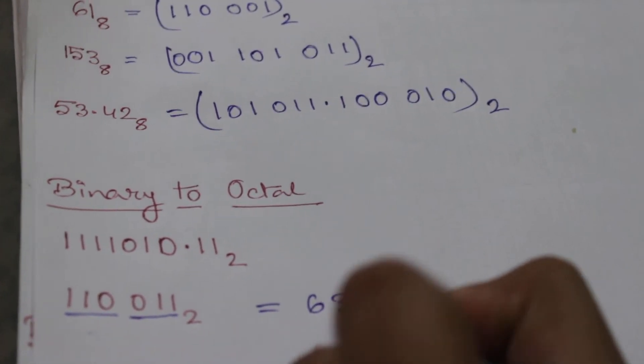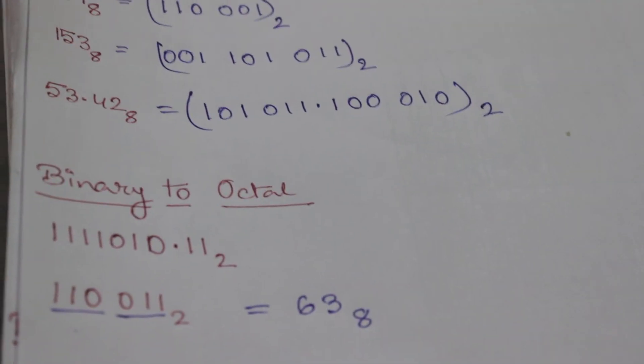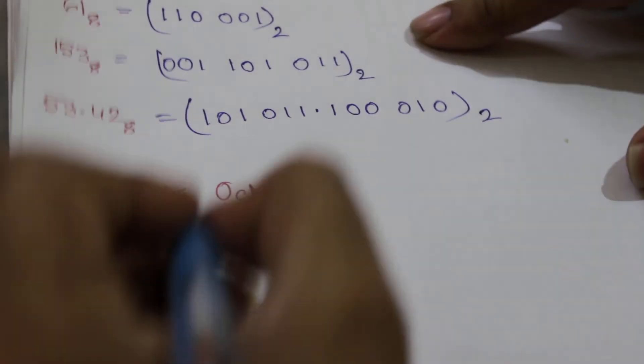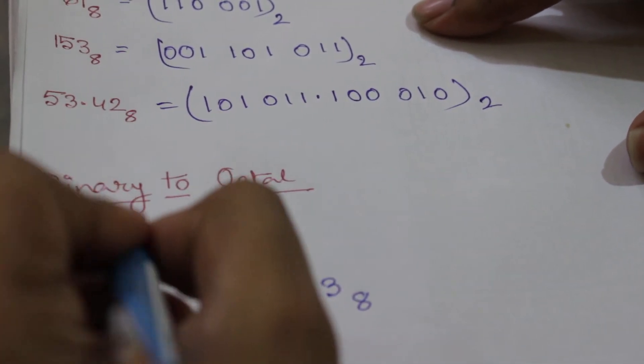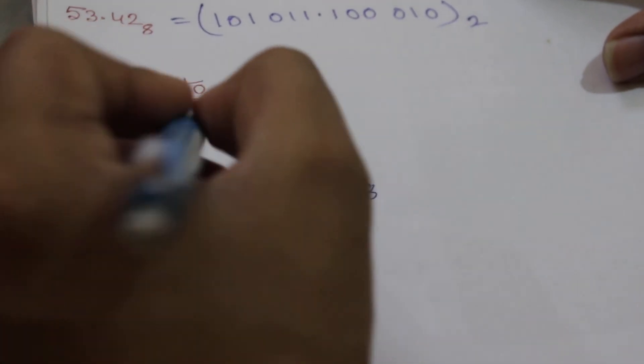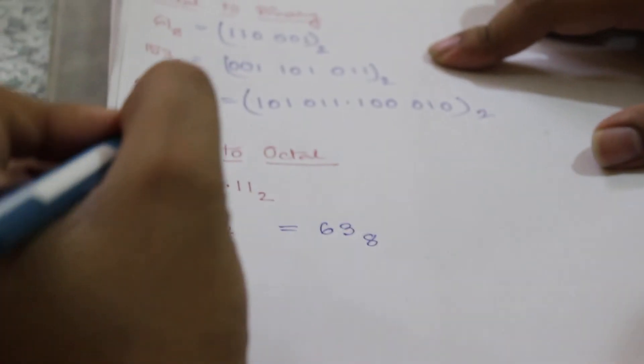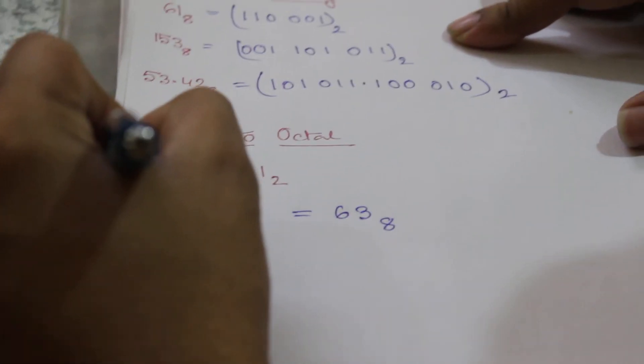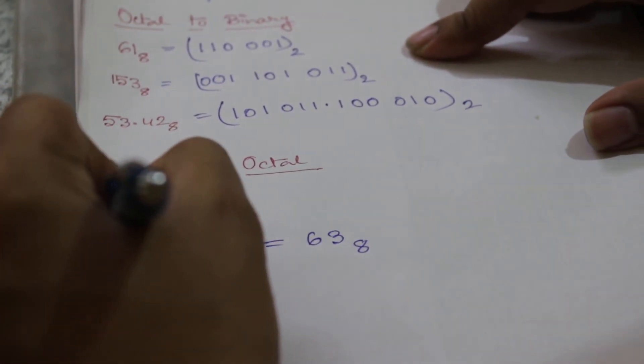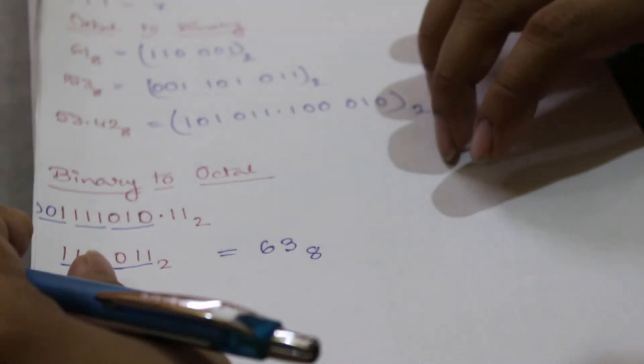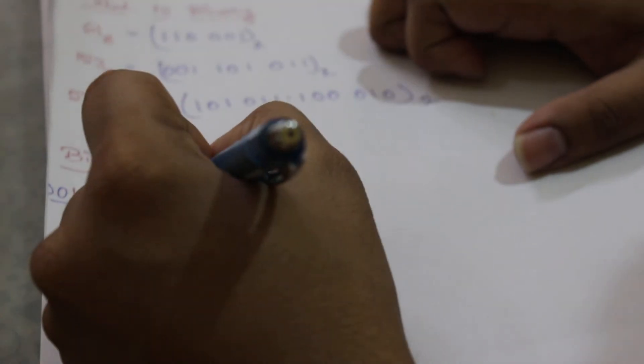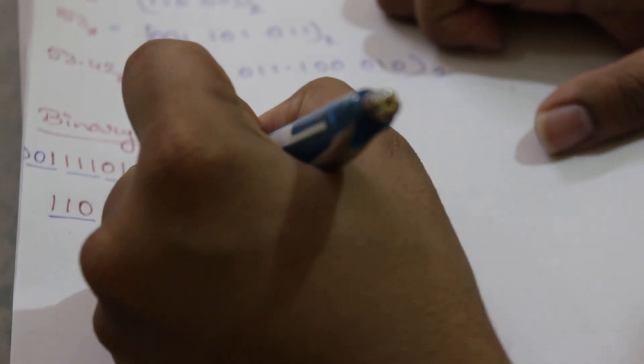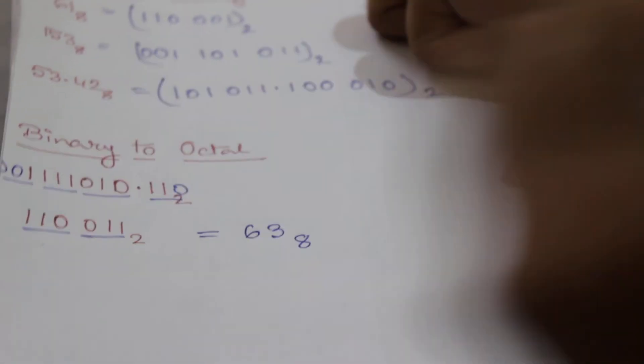Now we will take one fractional example. This is the example, so we will divide it into a group of three. Here is only one remaining, so we will put two zeros before it to complete the group. And after the decimal point, there is only two digits, so we will write one zero after it and we will make it a group of three.